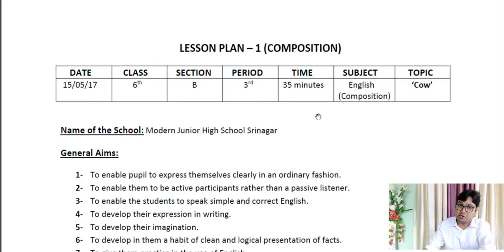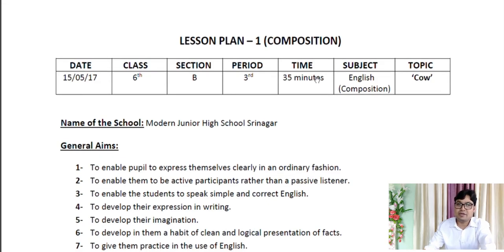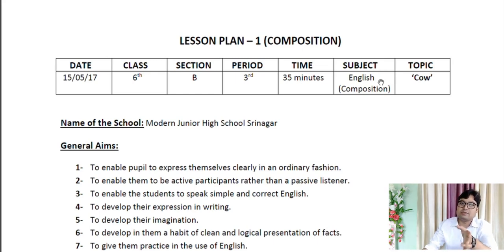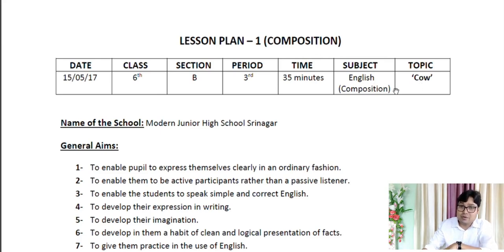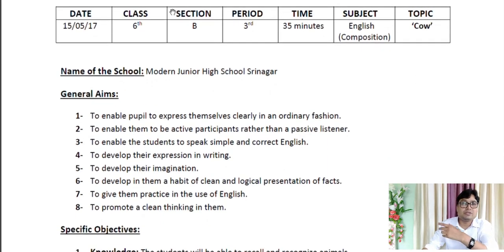You have to fill the date on which you are teaching this particular lesson plan. You have to fill the class — I've filled it as Class 6th, so if you are teaching Class 7th or 8th, fill accordingly. Then comes section, then period, then time, which generally extends from 35 to 45 minutes, according to the classroom timetable. Then comes subject — I've written English Composition here. English has three other parts: grammar, prose, and poetry. I've specified composition because it is taken separately. Finally, on the extreme right, there is the topic being taught today.